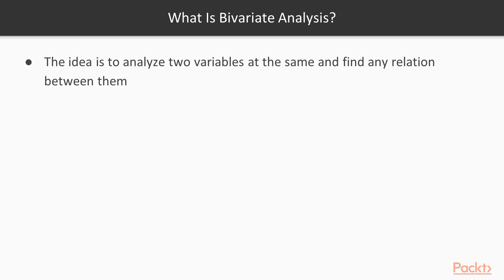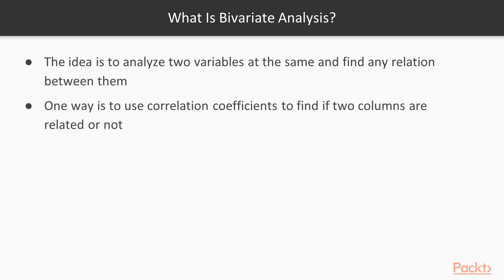So what exactly is bivariate analysis? The idea is to analyze two variables of your dataset at the same time and find any relationship that exists between them. One way is to use the correlation coefficient to find if two columns are related to one another or not. The correlation can be negative or positive, or it might not even exist at all.